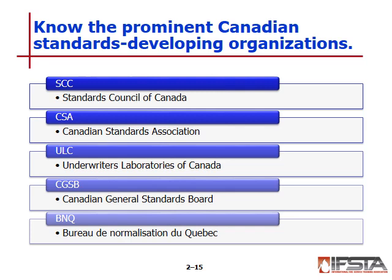NFPA publishes handbooks to help inspectors interpret standards, which may be introduced in legal proceedings to demonstrate accepted industry practices. Handbooks inspectors may use include the NFPA 1 Fire Code Handbook, NFPA 101 Life Safety Code Handbook, NFPA 72 National Fire Alarm and Signaling Code Handbook, NFPA 70 National Electrical Code Handbook, NFPA 13 Automatic Sprinkler Systems Handbook, and the Fire Protection Handbook.